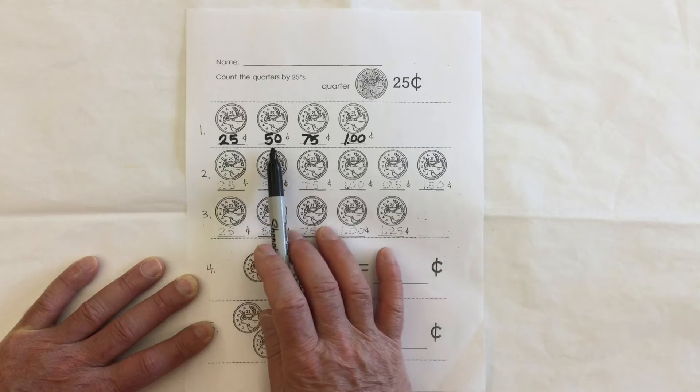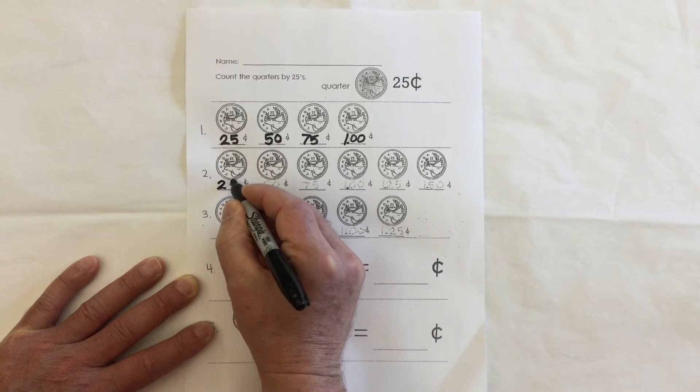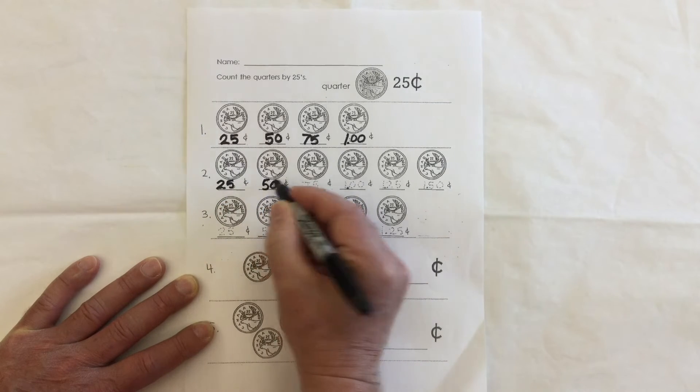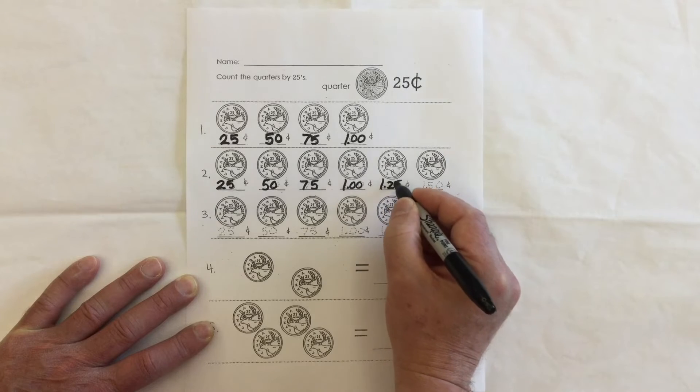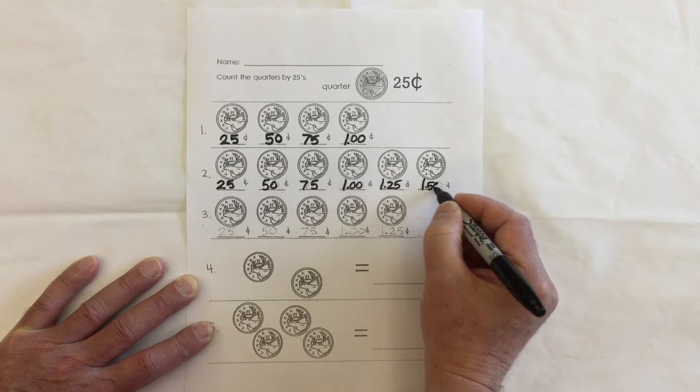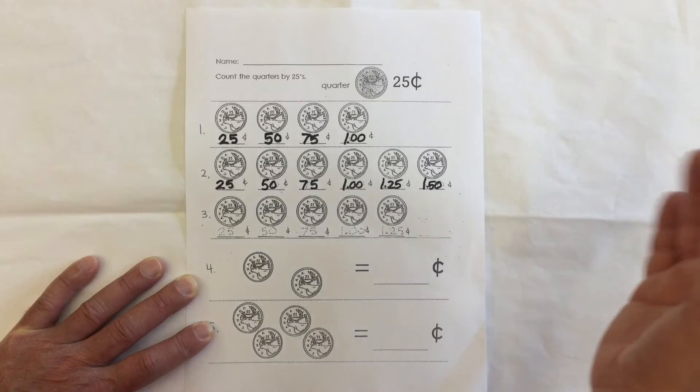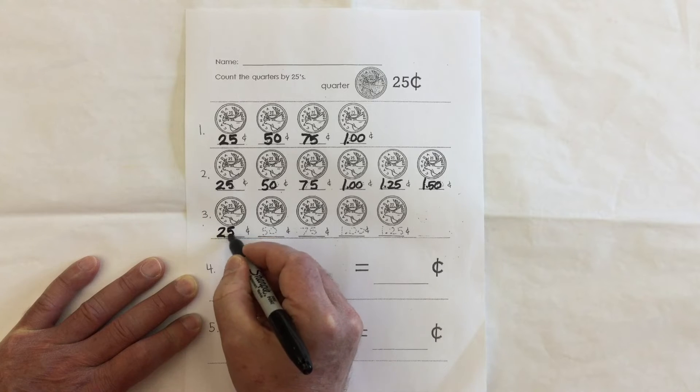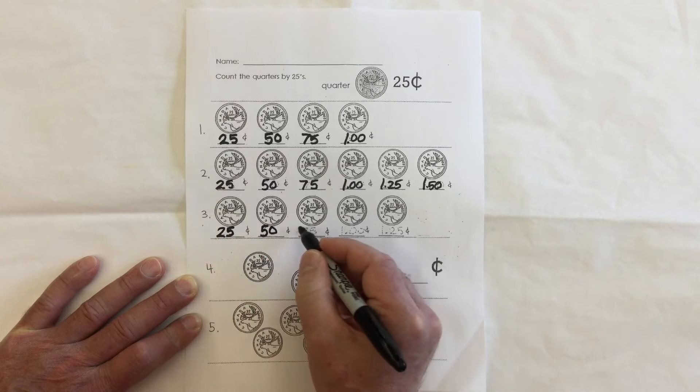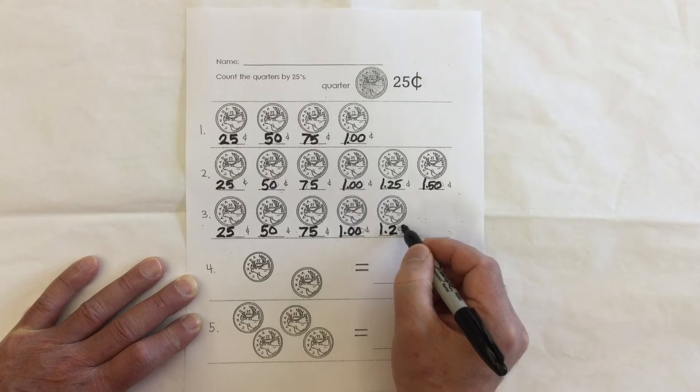25, 50, 75, 100, 125, 150, and you keep going, 175, 200, 225, 250, 275, 300, 325, 350, 375, 400, and so on. Let's do number three here. First quarter, 25, 50, 75, 100, 125.